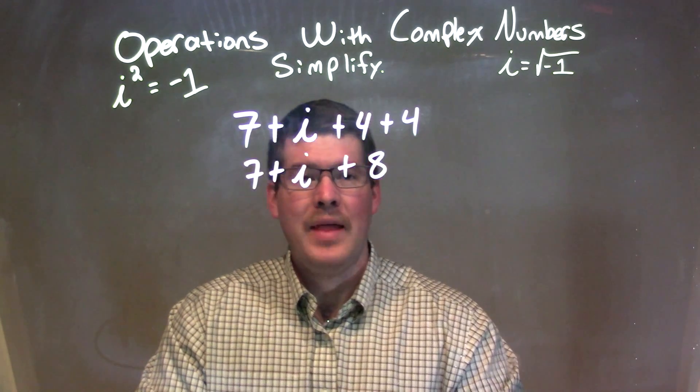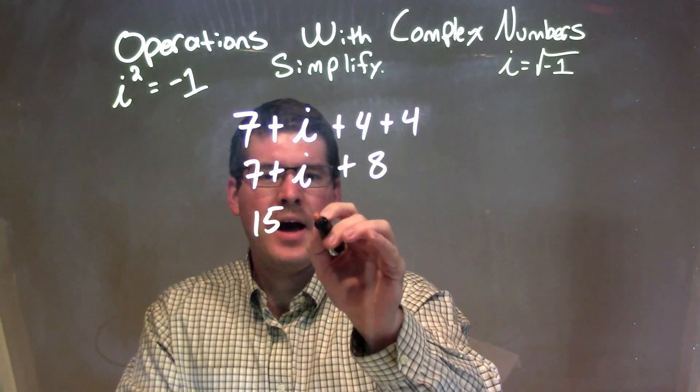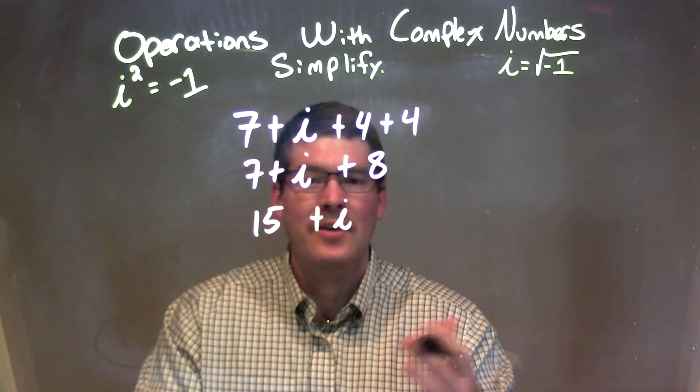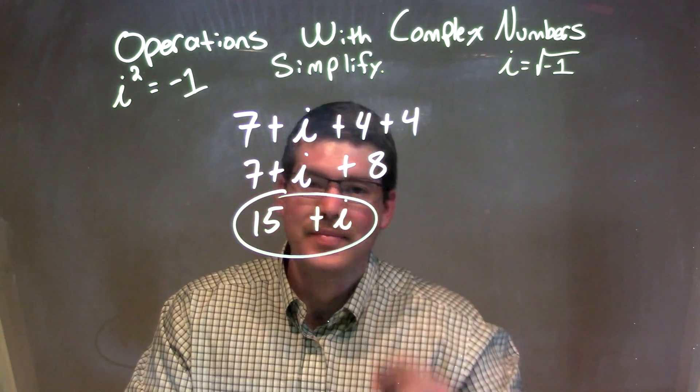If we want to combine that 7 and the 8 together, that comes out to be 15, and the i is just by itself. I had nothing else that I can combine with because there's no other i's out there. So our final answer here is just 15 plus i.